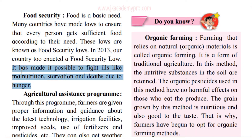Malnutrition is when people do not get proper food or a balanced diet — they do not get food in the proper proportion. Starvation is when food is not available at all, so they starve and are not able to eat. Because of both these things there are deaths sometimes — people can die because of hunger. Therefore, these laws have been brought into existence so that every person gets enough food to eat and nobody dies of hunger.